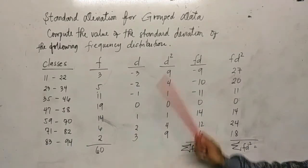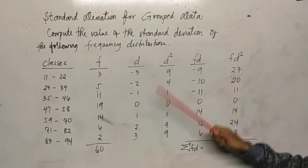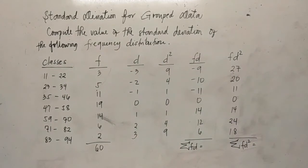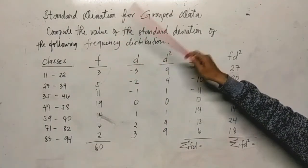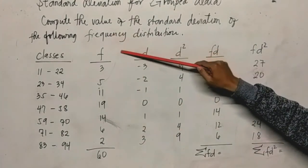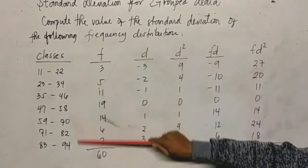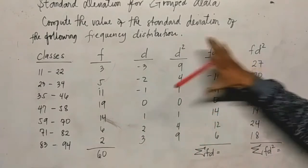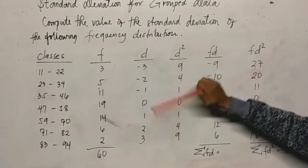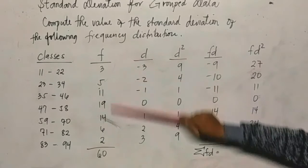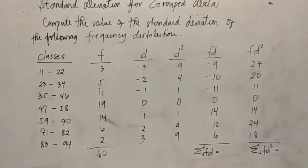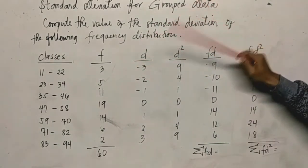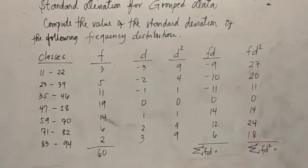So to make it easier to understand, we have here an example. Compute or find the value of the mean standard deviation of the following frequency distribution. So normally, the given would only be classes and the frequency. We'll show step by step how to get the other values.